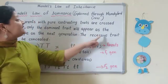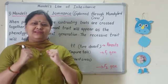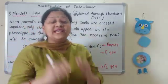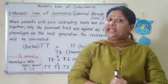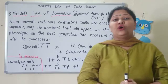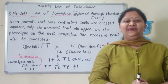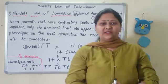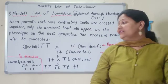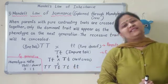The recessive trait will be concealed — concealed literally means hidden, chhip jaana. So the recessive trait in F1 will not be visible; it will be hidden, concealed. In F1 generation, only one character is able to express itself — the dominant character expresses, while the recessive is hidden. In the F2 generation, the recessive reappears in the ratio 3:1 — three dominant (tall) are visible and one recessive (dwarf) appears.